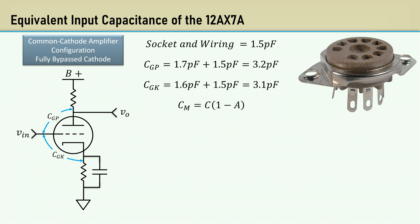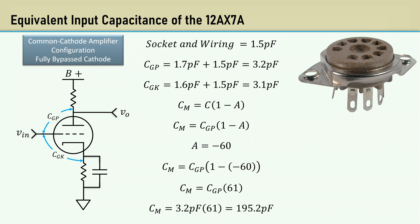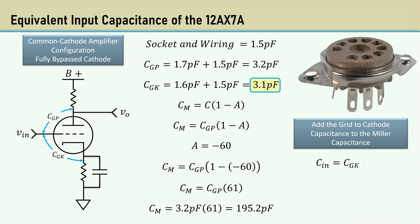Here is the equation we derived for the Miller capacitance. The parasitic capacitance from the output to the input is the grid-to-plate capacitance. A typical gain of this type amplifier is minus 60. Plugging in the gain of minus 60 shows that the Miller capacitance is 61 times the grid-to-plate capacitance. Multiplying the grid-to-plate capacitance by 61 yields 195.2 picofarads. Since the input also sees the grid-to-cathode capacitance, we must add the grid-to-cathode capacitance to the Miller capacitance. That comes out to an input capacitance of 198.3 picofarads. This value is what we need to know to calculate the frequency response of the amplifier.